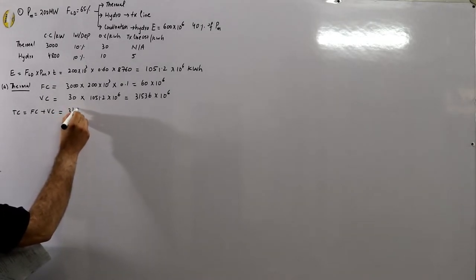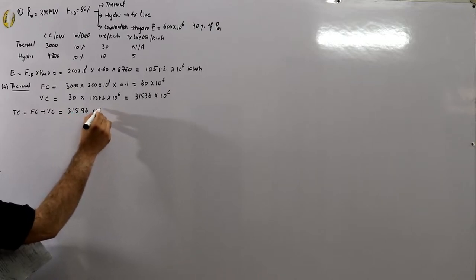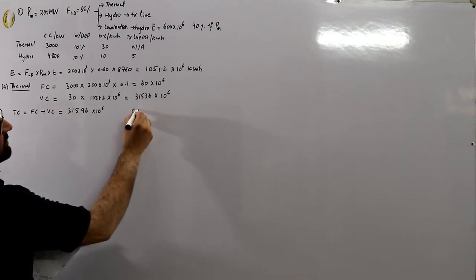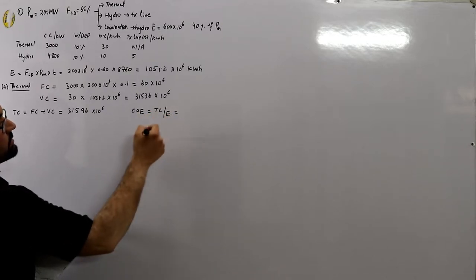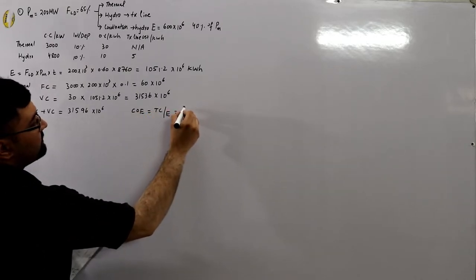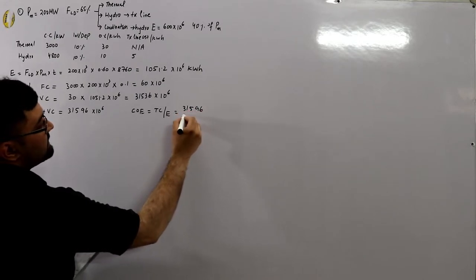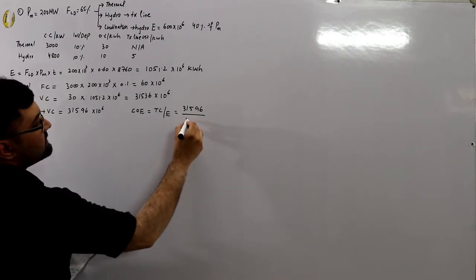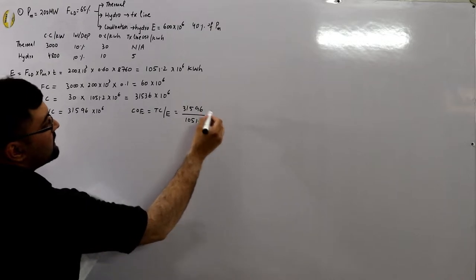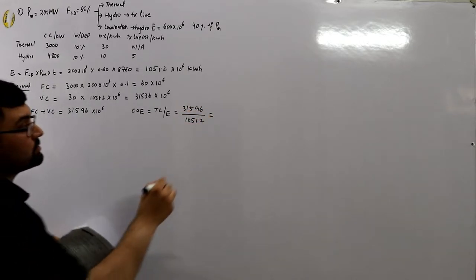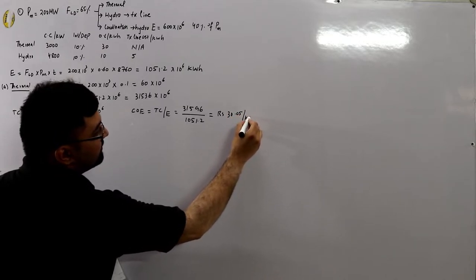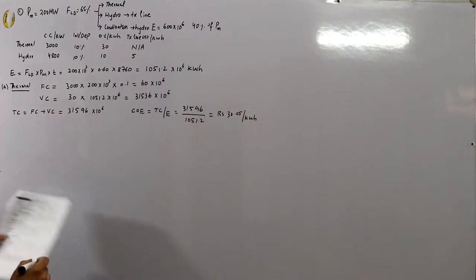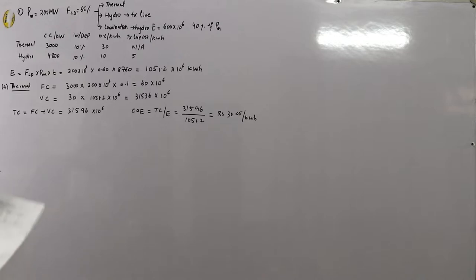The cost of electricity per unit for thermal = total cost ÷ total energy units = 31596 × 10^6 ÷ 1051.2 × 10^6 = Rs. 30.05 per kilowatt hour. This is the cost of electricity for the thermal-only option.